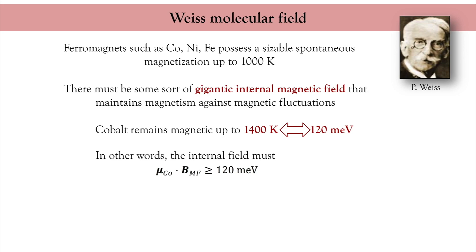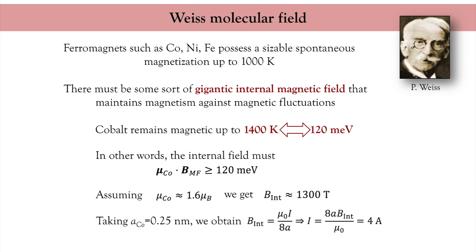Using the magnetic moment of cobalt, the internal field — called the Weiss molecular field — must be as large as 1300 Tesla, which is insanely large. It is even more puzzling when computing the corresponding current needed to generate such a field at the atomic scale. Using the Biot-Savart law and assuming the current circulates around a loop of the size of the cobalt unit cell, I obtain a current of 4 amperes. This indicates that whatever the nature of the force that maintains ferromagnetism at room temperature, it must be enormous.